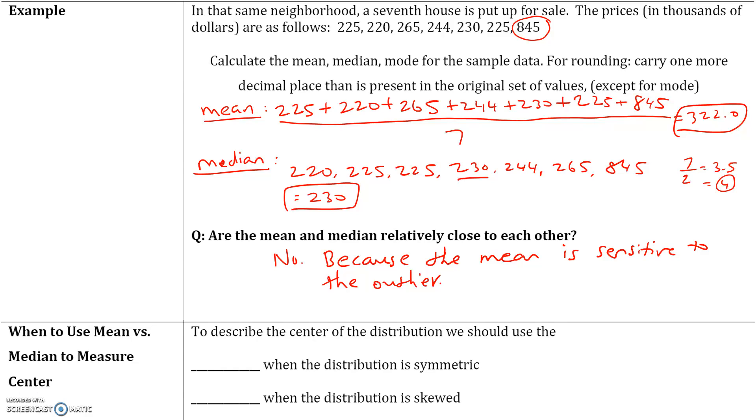So when to use mean versus median to measure center: when the distribution is symmetric, we would use the mean. When the distribution is skewed, we would use the median.